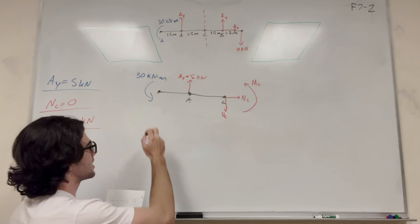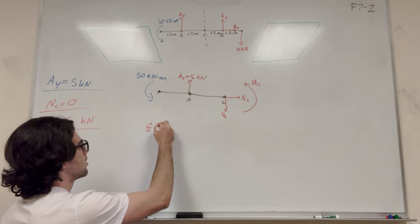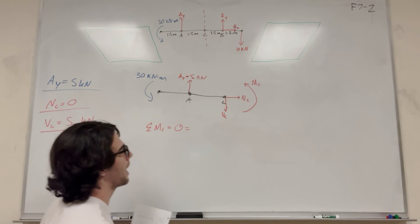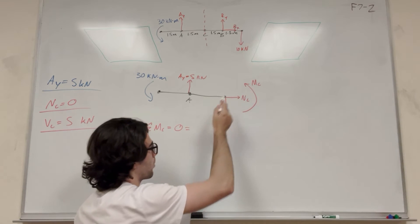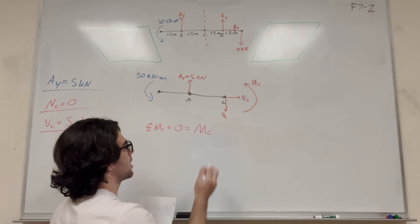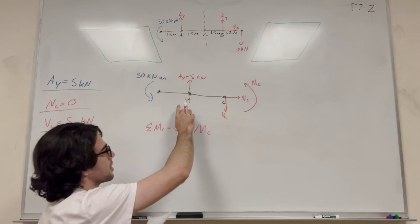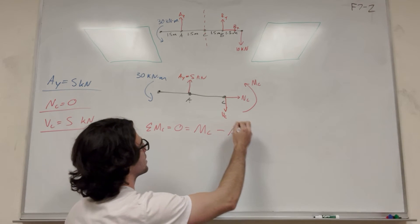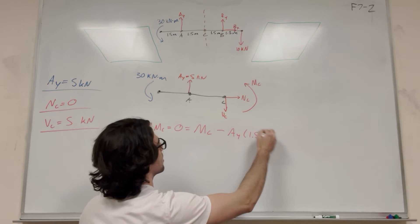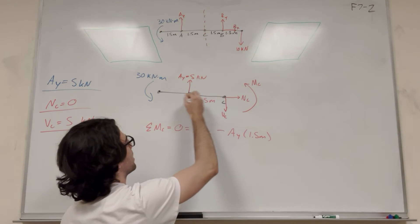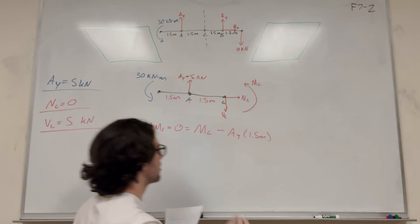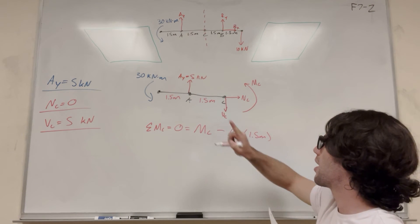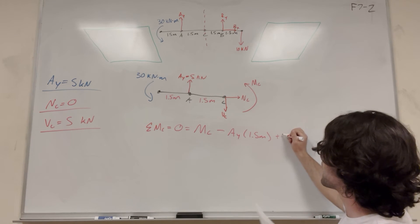All right, so now let's take sum of the moments at C. So sum of the moments at C, we know that's going to be equal to zero because we're at equilibrium. So then let's add them up. We have this moment at C that's going counterclockwise. So we're going to add the moment of C. Then A_Y is making it push this way, which is clockwise. So we're going to subtract A_Y. And then its distance is 1.5 meters. And then we can't forget about this moment, which is also going counterclockwise. So that's going to be a positive number, plus 30.